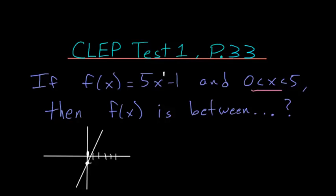So f of x would have to be between this point for its lower value, so essentially this negative 1 here, all the way up to where the line intersects the x value of 5, so somewhere up here, whatever this y value would be.